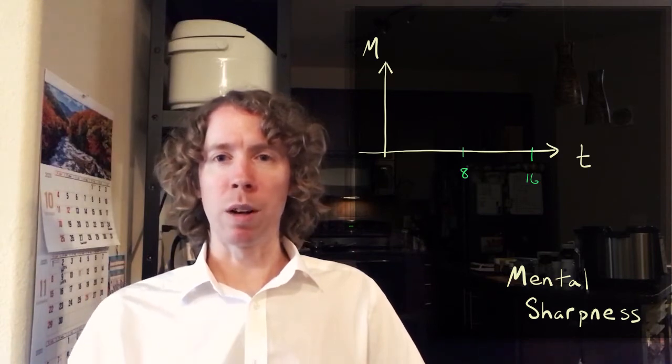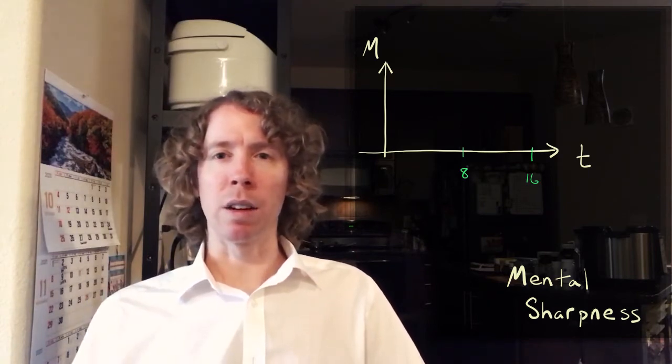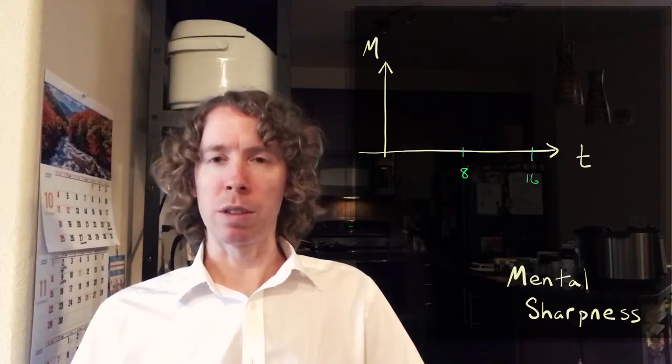We can write down the equation. We'll use a horizontal axis of T for hours after you've woken up and a vertical axis of, let's say M for mental sharpness.